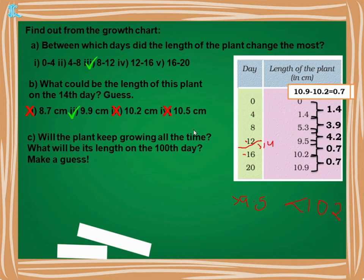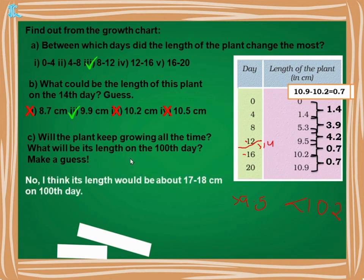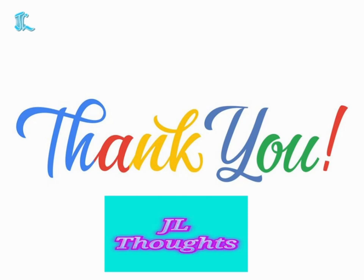Will the plant keep growing all the time? No — at some point the growth will stop. What will be its length on the 100th day? Make a guess. We estimate it will be approximately 17 to 18 centimeters. With this, we have completed Chapter 12, Smart Charts, in two parts. Thank you, children — have a nice day, and we will meet in the next chapter.